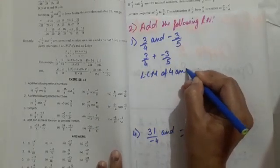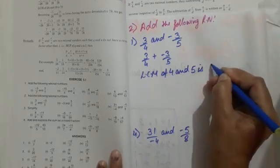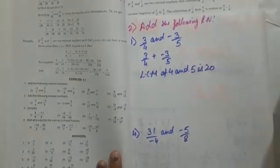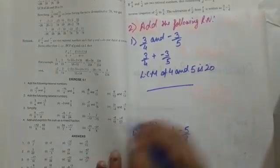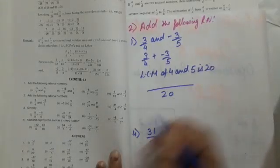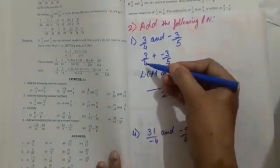According to the statement, what we will do? We have to add, but here both denominators are different, so we will take LCM. LCM of 4 and 5 will be 20.